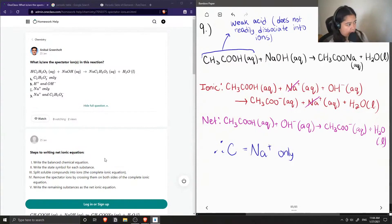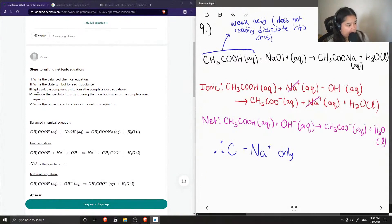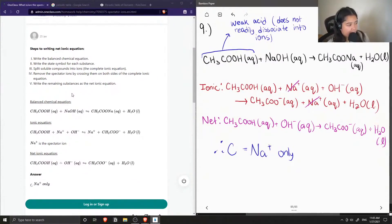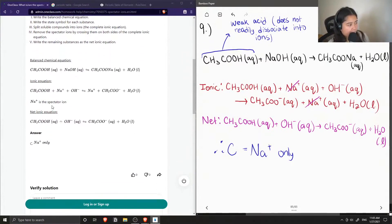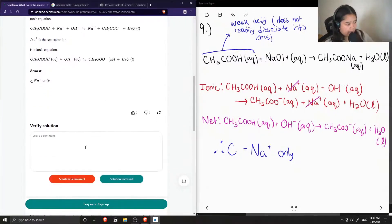Okay, so now let's see what the tutor said. Steps to writing the net ionic equation. Step one is to write the balanced chemical equation. Step two is to write the state symbol for each substance. Step three is to split soluble compounds into ions. Four is remove spectator ions by crossing them on both sides of the complete ionic equation. And then step five, write the remaining substances as the net ionic equation. So our equation was already balanced. And then they showed that only the sodium hydroxide and the sodium acetate will separate into ions, making sodium plus the only spectator ion for this equation. So this solution is correct.